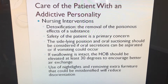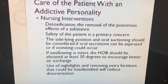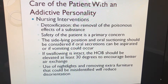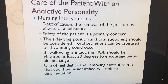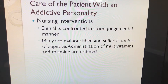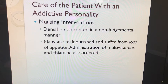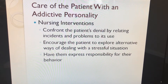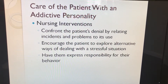The first nursing intervention step is detoxification — the removal of the poisonous effects of a substance. Safety is the primary concern: the sidelying position and oral suctioning should be considered if vomiting or aspiration risk exists. The head of bed should be elevated at least 30 degrees, and nightlights with removal of extra furniture can reduce disorientation. Denial is confronted in a nonjudgmental manner, and since many patients are malnourished, multivitamins and thiamine are administered. Encourage the patient to explore alternative coping strategies and take responsibility for their behavior.